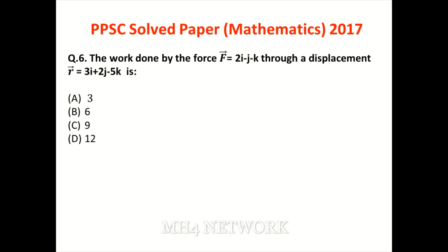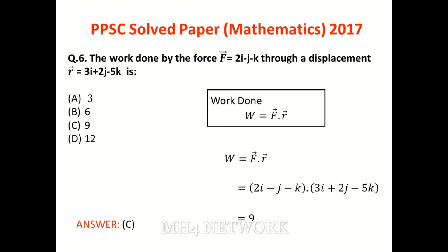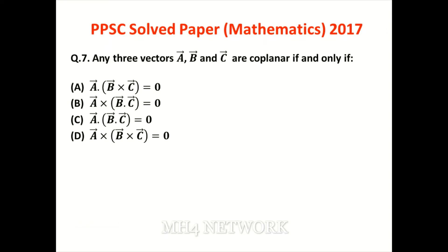Question number six: the work done by a force through a displacement — yeh very simple question hai. Work done ka formula hain force into displacement, yani dot product. Force aur displacement dono given hain, unka dot product lein toh simply 9 aa jaata hai. Option C is the correct answer.